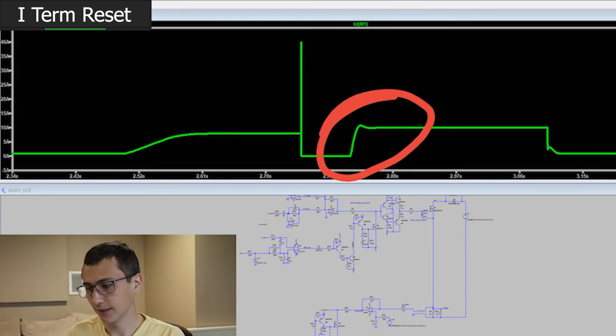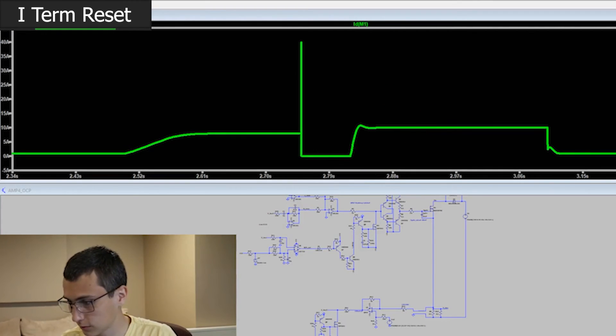I set it to negative a lot, which resets the integrator completely. And then we come back around, it'll turn on more normally. So before we were clamping it to zero, now we're clamping it to negative 15 volts. And that allows for turning on as one would expect.